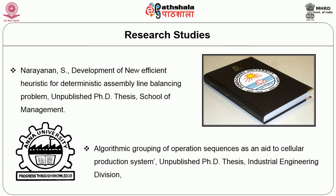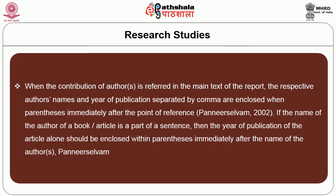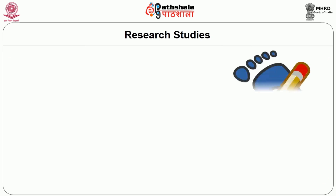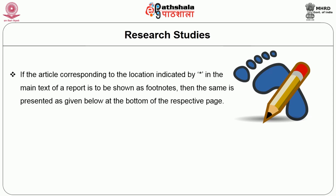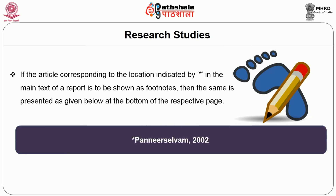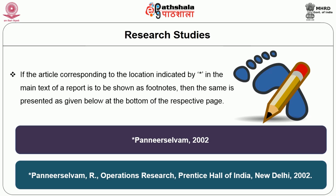When an author's contribution is referred to in the main text, the author's name and year of publication separated by a comma are enclosed in parentheses immediately after the point of reference. If the author's name is part of a sentence, then only the year of publication should be enclosed in parentheses immediately after the name. If an article is to be shown as a footnote, it is presented at the bottom of the respective page.